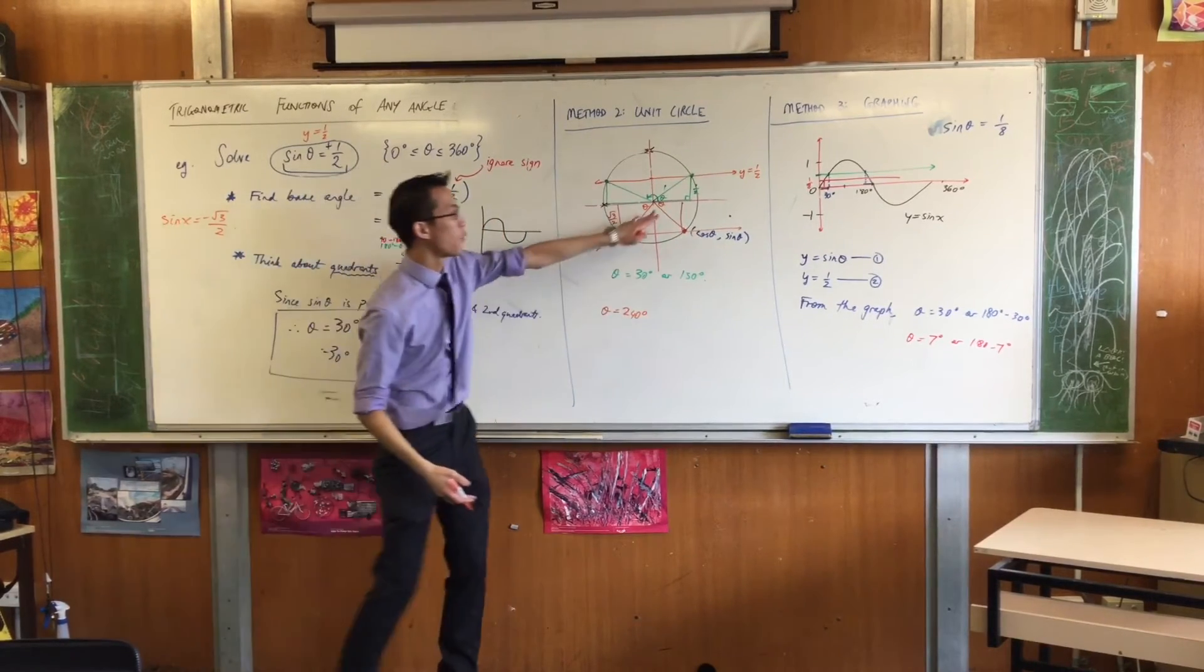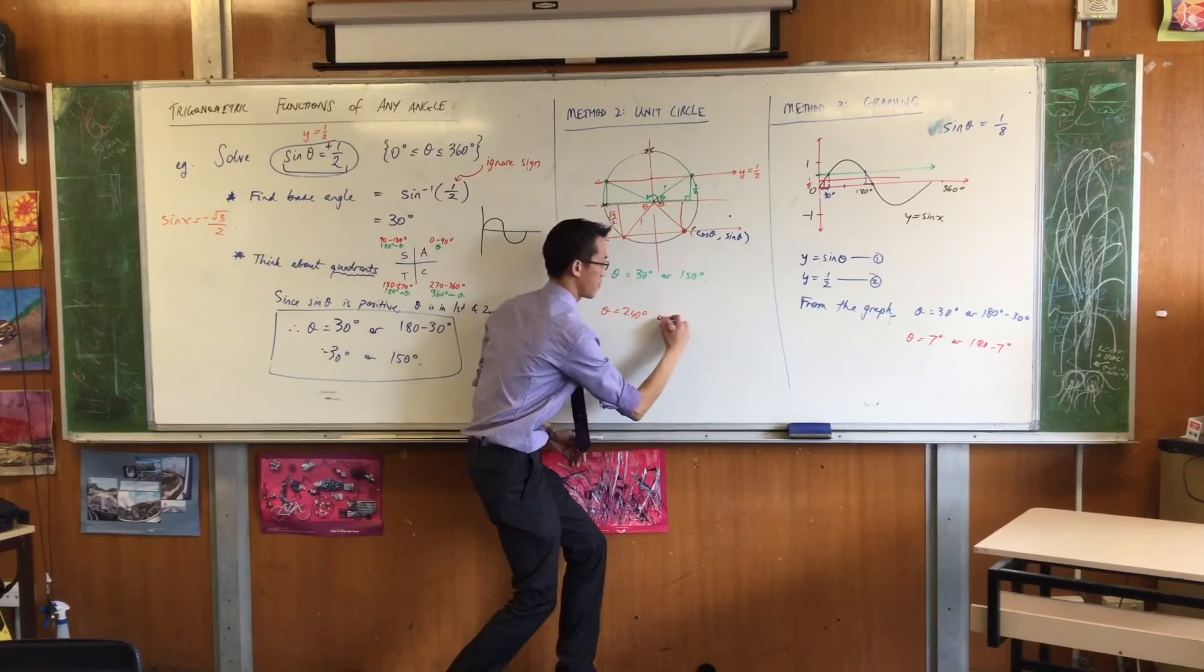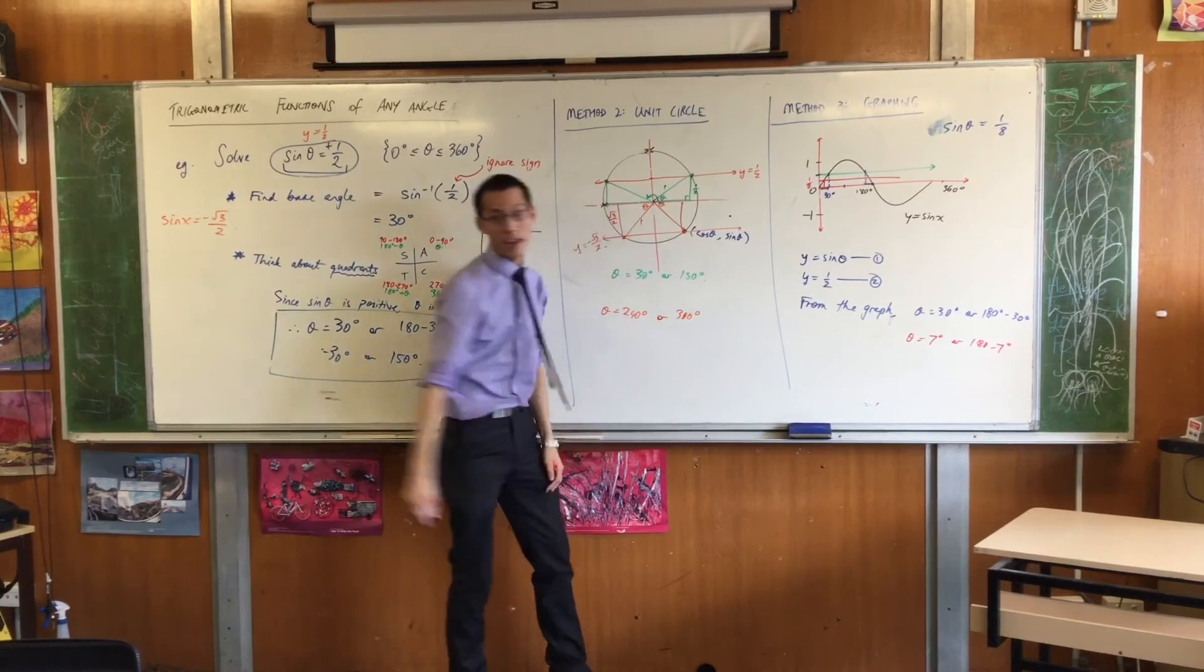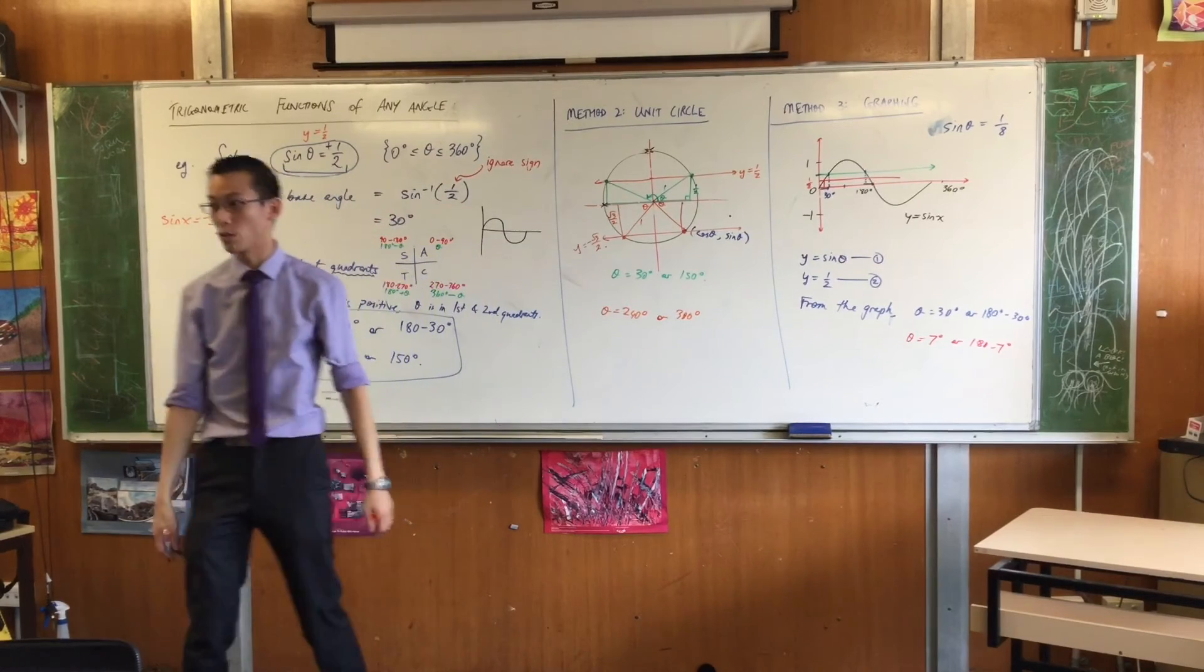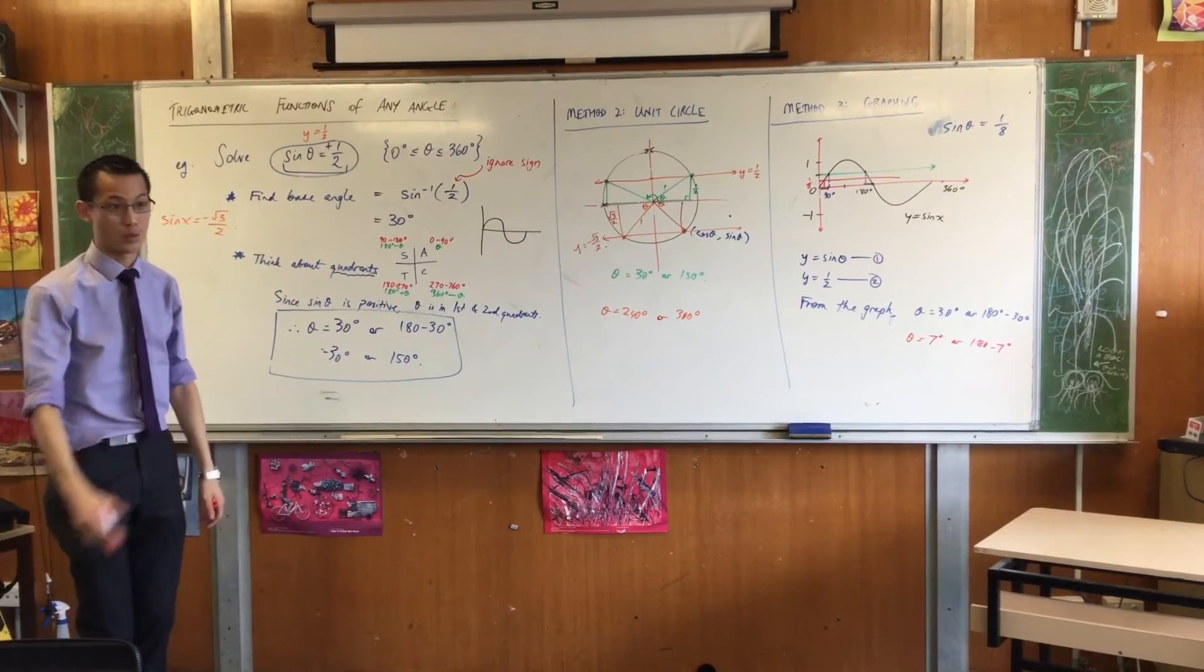So how far do I have to go all the way around to get to this spot? Answer: 360 take away that last bit, right? Which is 300. And you go ahead and pop into your calculator sine 240 or sine 300, and it will tell you negative root 3 on 2.